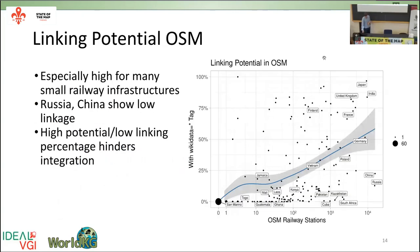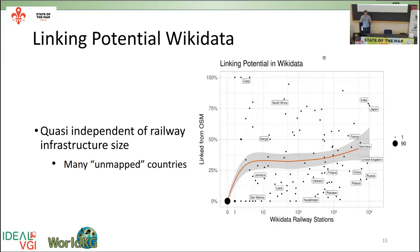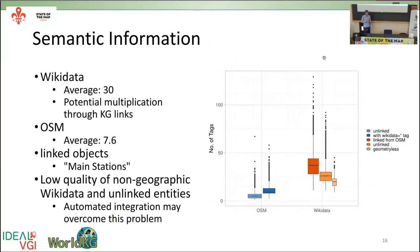When we look at only the data that is linked between the two sources — specifically the percentage of stations linked to Wikidata — we see a kind of increase for larger networks, so larger networks seem to be better linked in OSM. In Wikidata, there seems to be no correlation between the percentage of linked data and the total amount of data. There's a kind of difference. What about the semantic information? Wikidata has a lot more information stored per object than OpenStreetMap does.